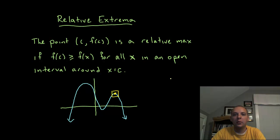So here's the formal definition. We say the point (c, f(c)), that's an x, y value, we say that's a relative max if that y value is greater than all the other y values for all x in any open interval around that particular point.